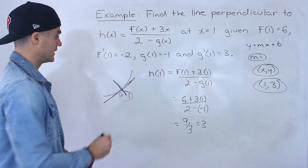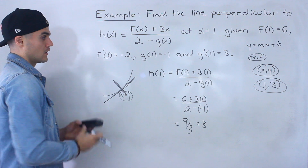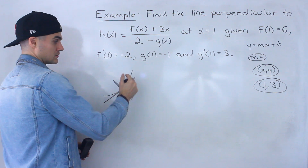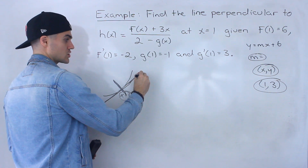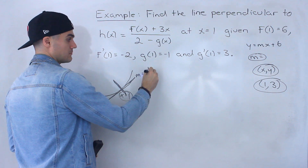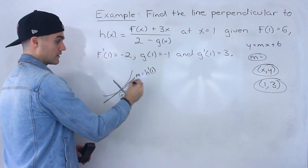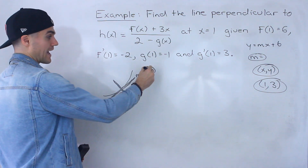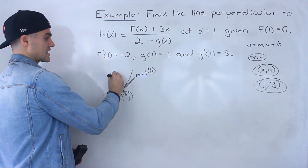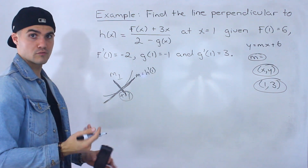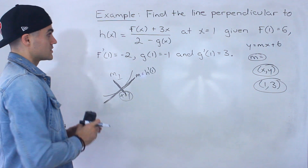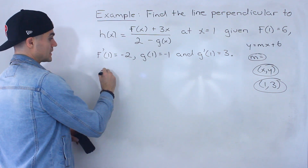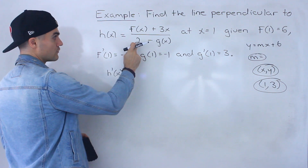We just need the slope. We can do it in two steps: first find the slope of the tangent, which is h prime of 1. Then, since we need the slope of the normal or perpendicular line, we take the negative reciprocal of that. So basically we need to find h prime of 1 first, which gives us the slope of the tangent.